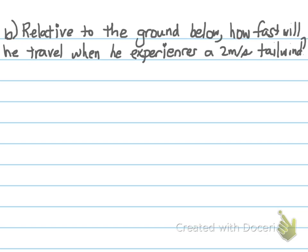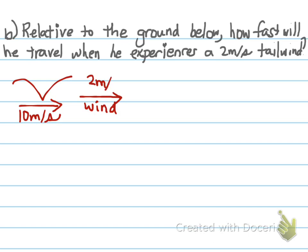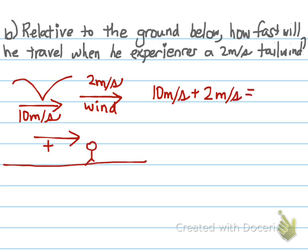Part B: how fast will Sneasley travel when he experiences a 2 meters per second tailwind? A tailwind comes from behind, so the wind blows in the same direction as the bird at 2 meters per second. Since these are parallel, I just add them: 10 plus 2 equals 12 meters per second. Relative to a person standing on the ground, he's moving 12 meters per second.